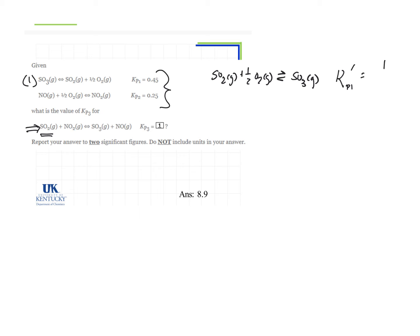It's going to be one over 0.45. You take the reciprocal when you reverse the reaction. That is equal to 2.222 repeating forever.